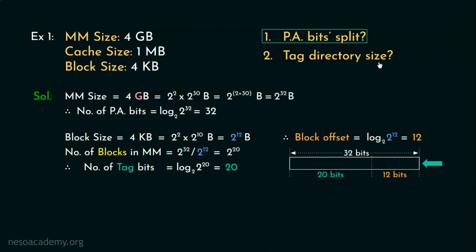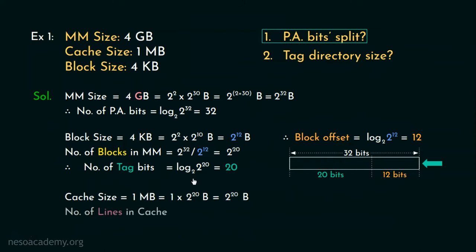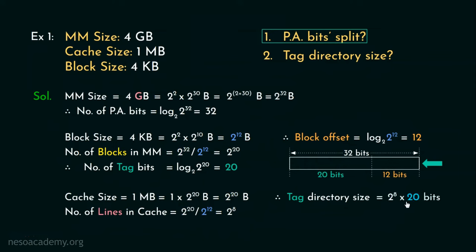Now coming to the tag directory size: a tag directory has as many entries as there are lines inside the cache. The cache size is 1MB, which is 2 to the power 20 bytes. Dividing by the line size of 2 to the power 12 bytes gives 2 to the power 8 lines. Therefore, the tag directory will have 2 to the power 8 entries, with each entry holding 20 bits of tag information. The tag directory size is 5120 bits, and that is the answer to the second question.